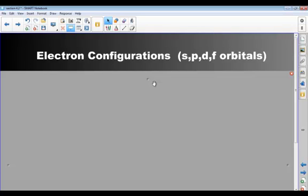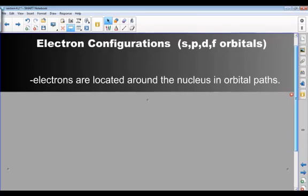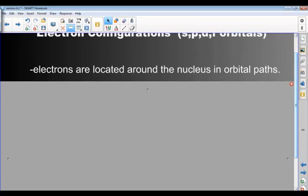They're called S-P-D-F orbitals. A couple of background things that you're going to need to know, such as the electrons are going to be located around the nucleus in orbital paths. They're in probability clouds, but we call them orbital paths because they kind of orbit the nucleus. They're always moving. And they're probability clouds because we don't know the exact location, but we know based on their energy how close they are to the nucleus, so the cloud region. They're located around the nucleus.